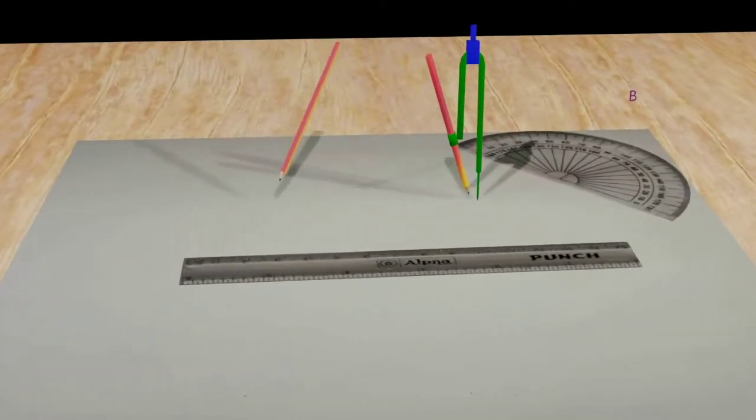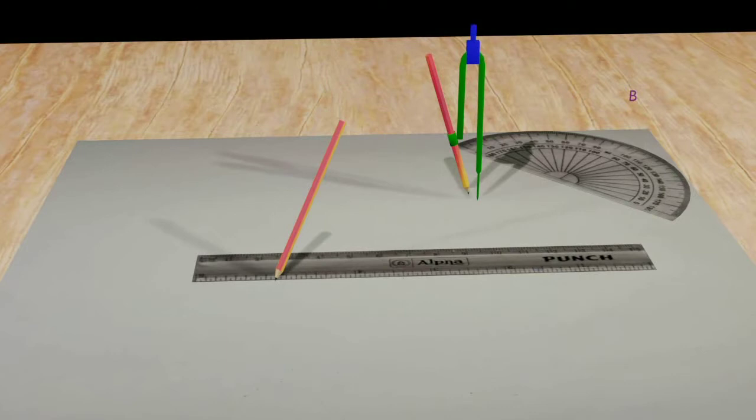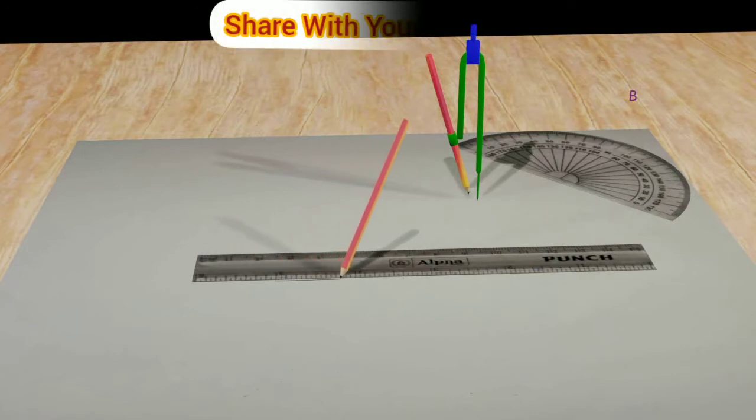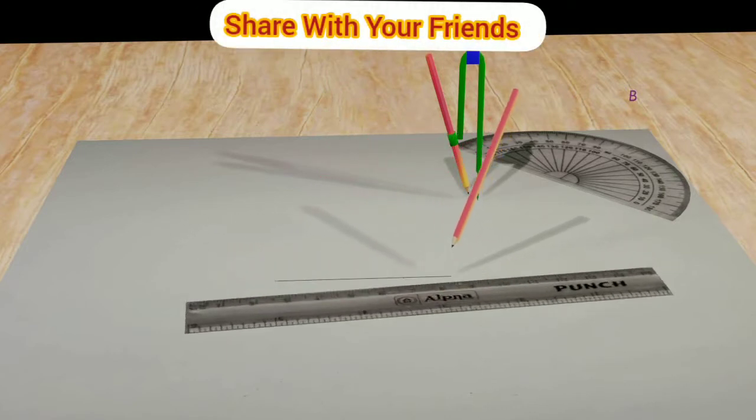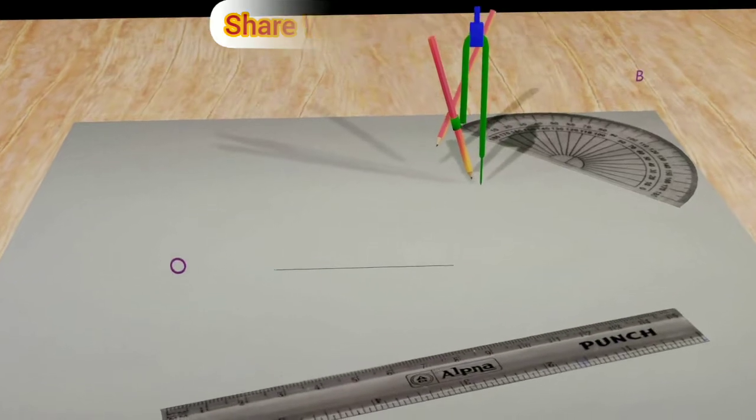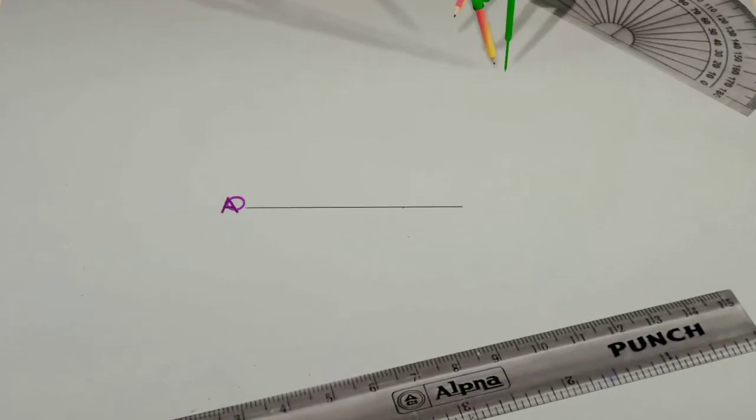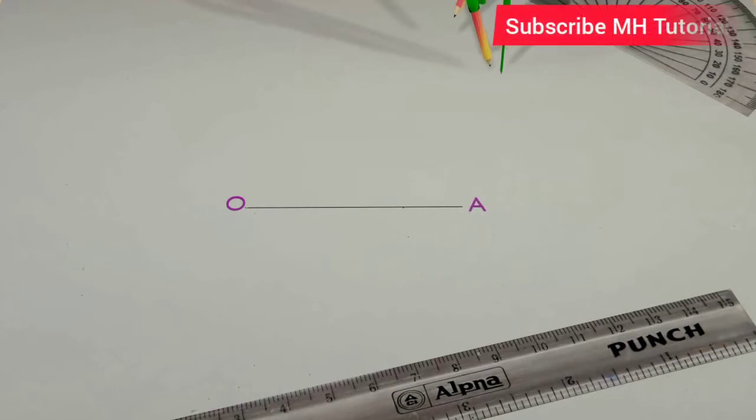First with a scale and a pencil, a straight line is drawn in the middle of the page. Its two endpoints are named O and A. Next, a pencil compass was taken.